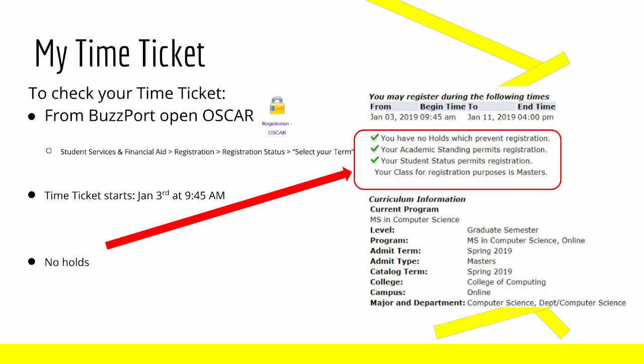Additionally, you can see if you have any holds on your account. A hold would be anything that would hold you back from signing up for classes, such as a missed payment or any other problems with your account. I have these green check marks, so as you can see, I have no holds.